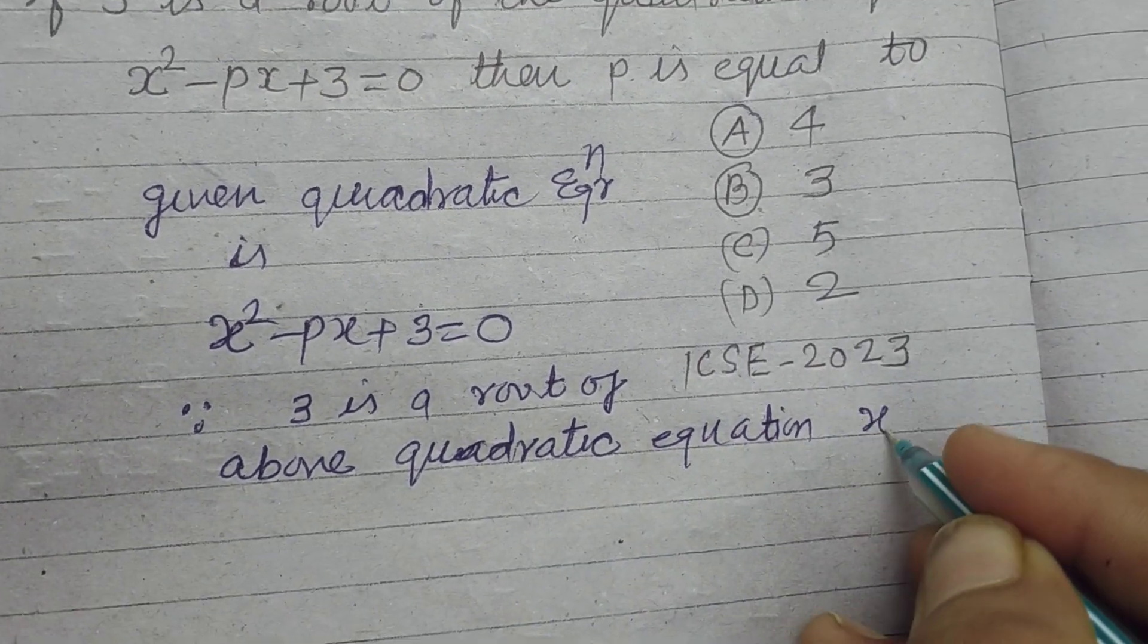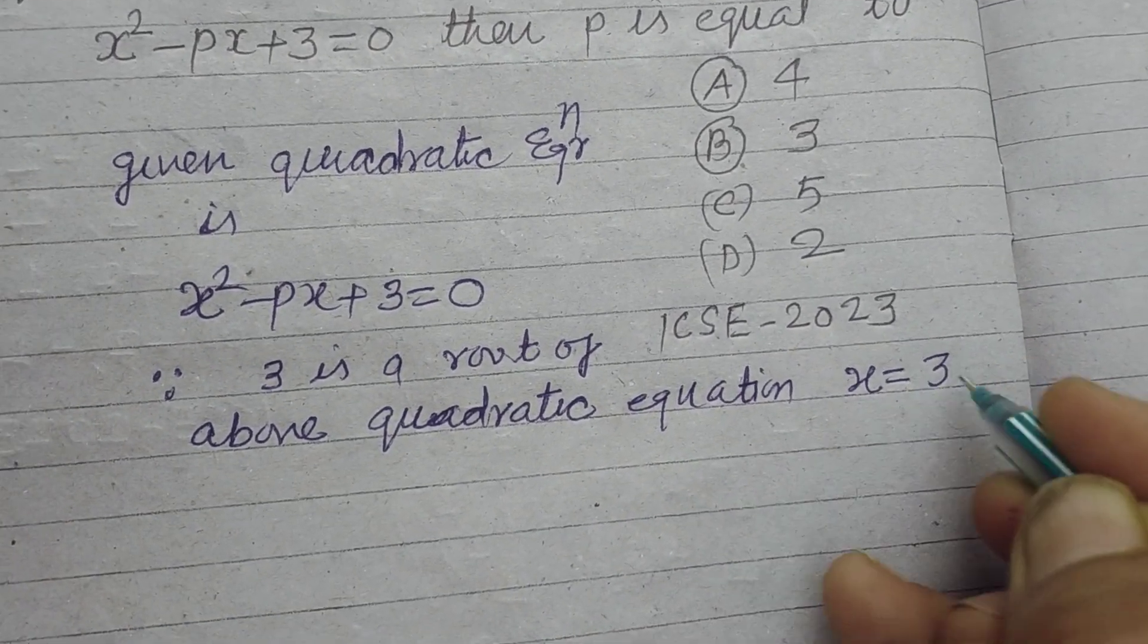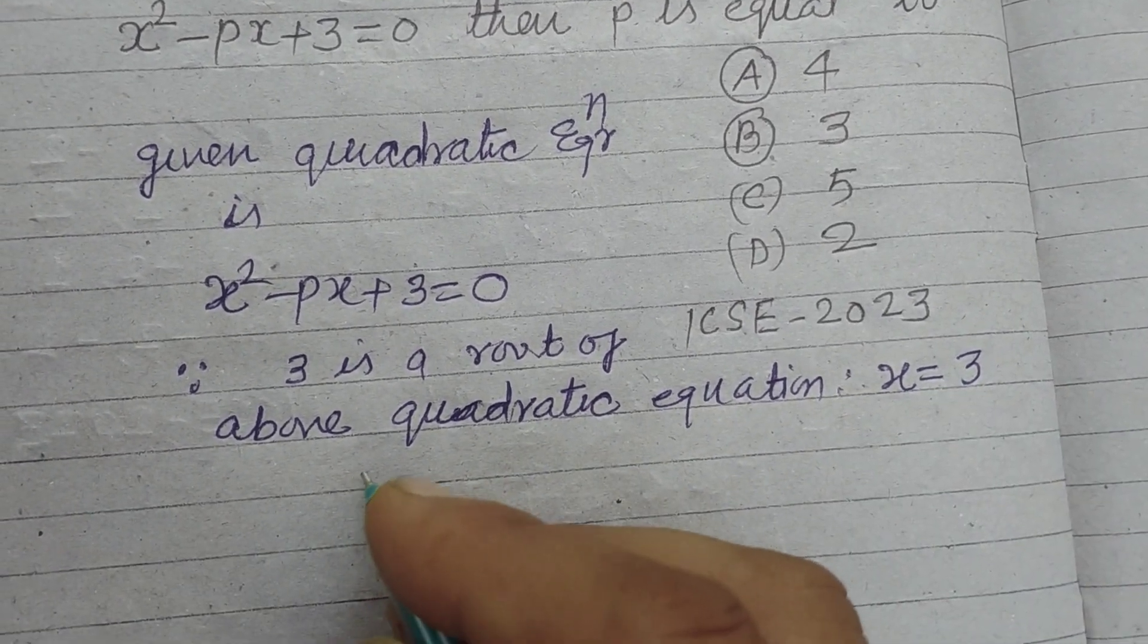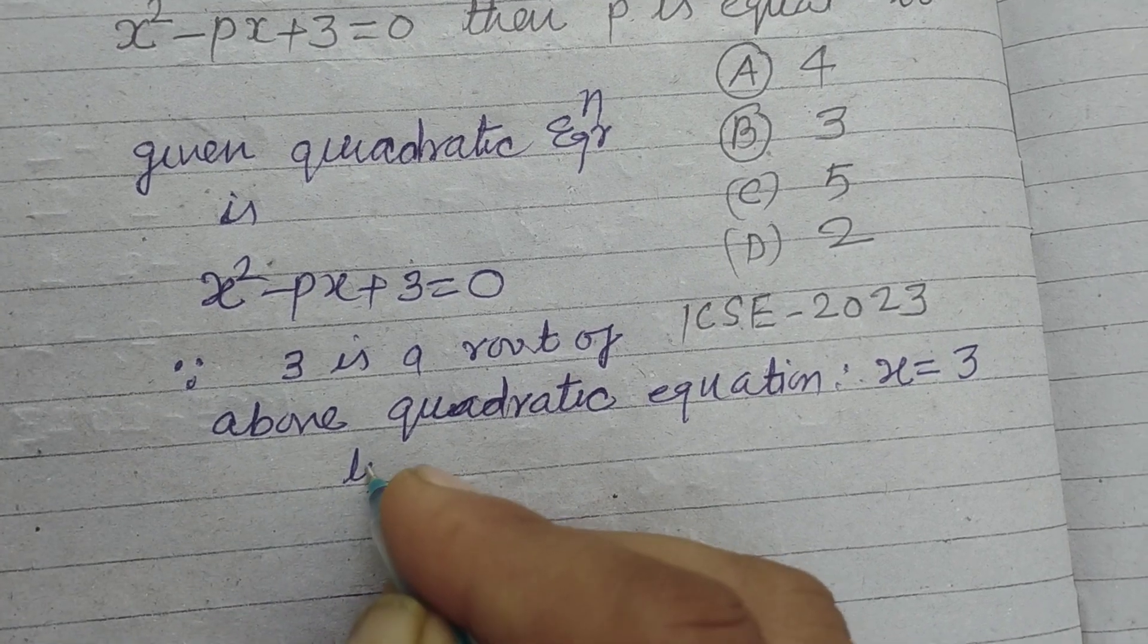it means it is a value of x, so x equal to 3. Therefore, putting x equal to 3 in the equation,